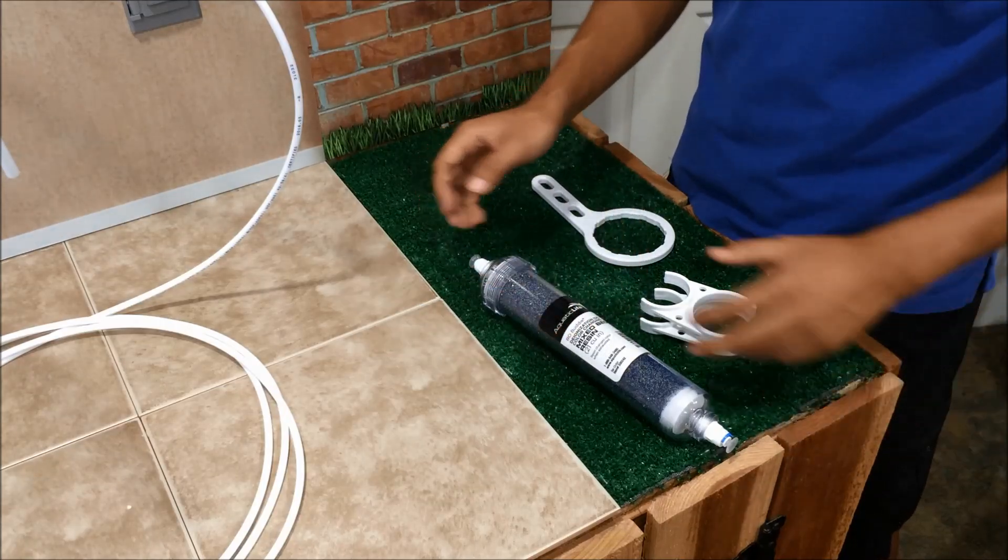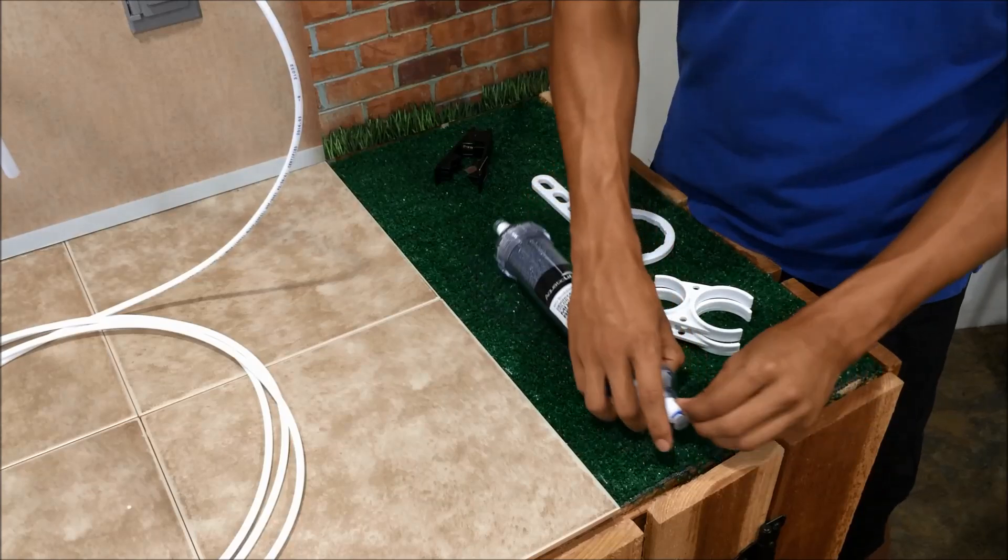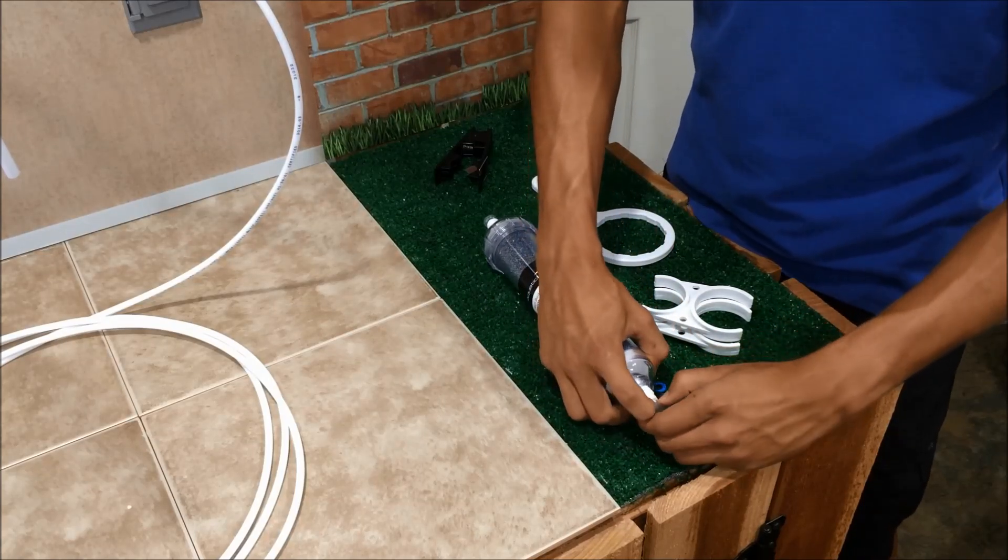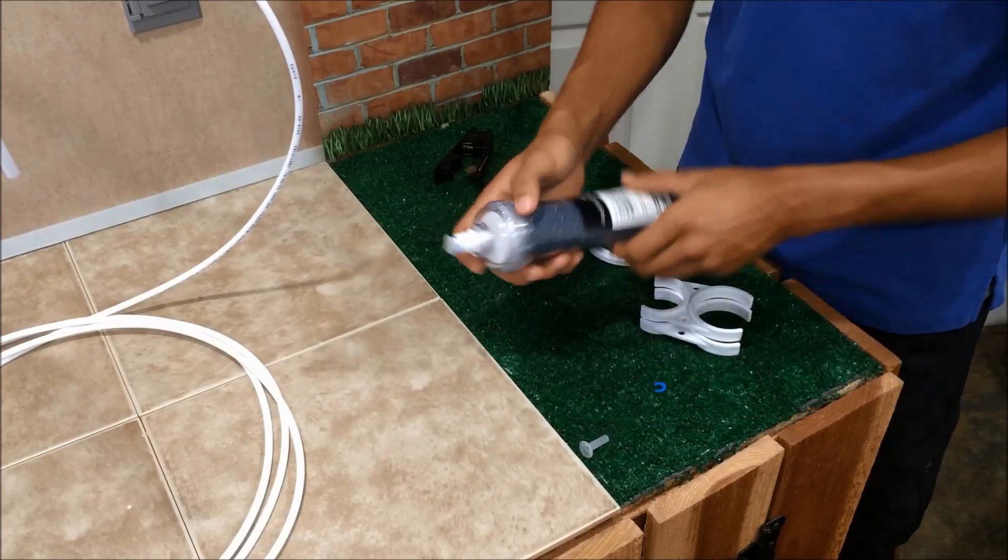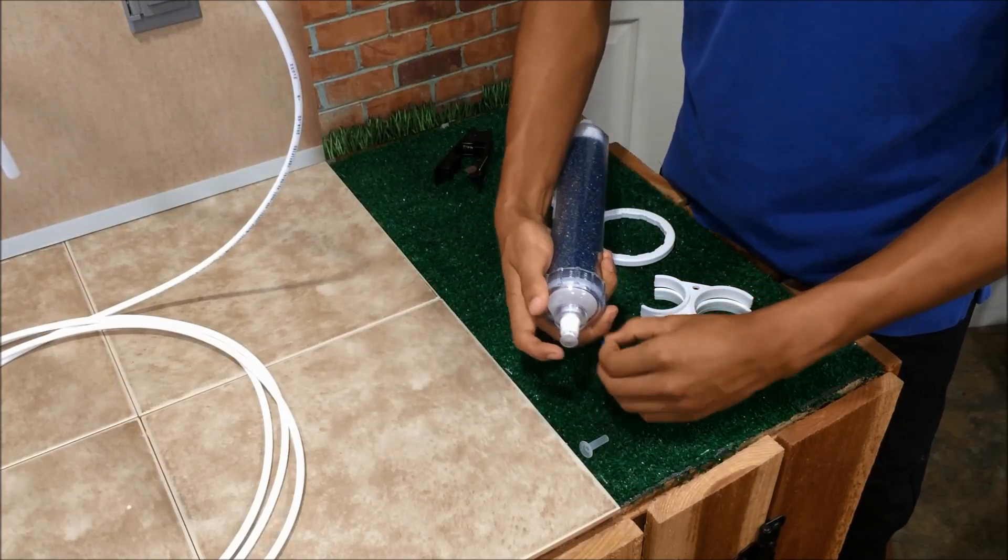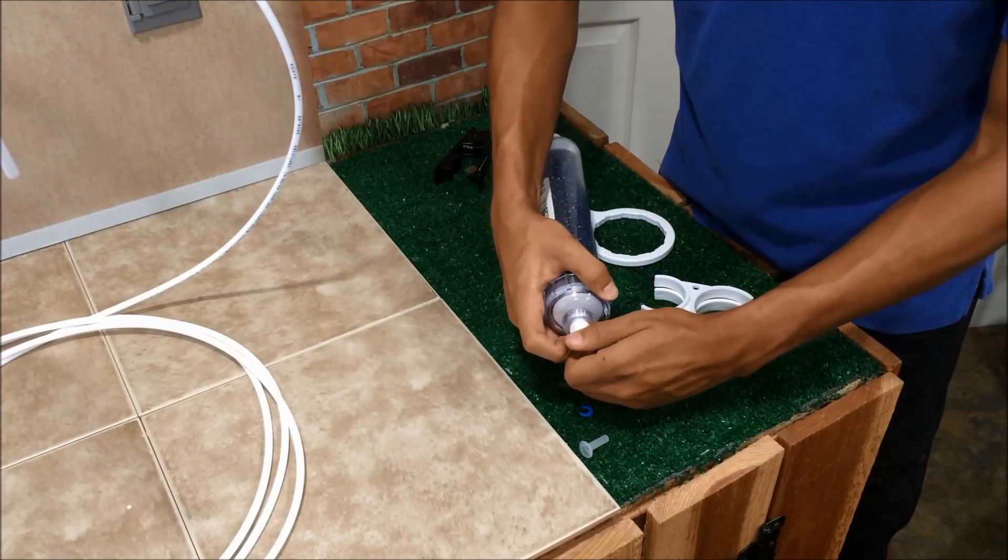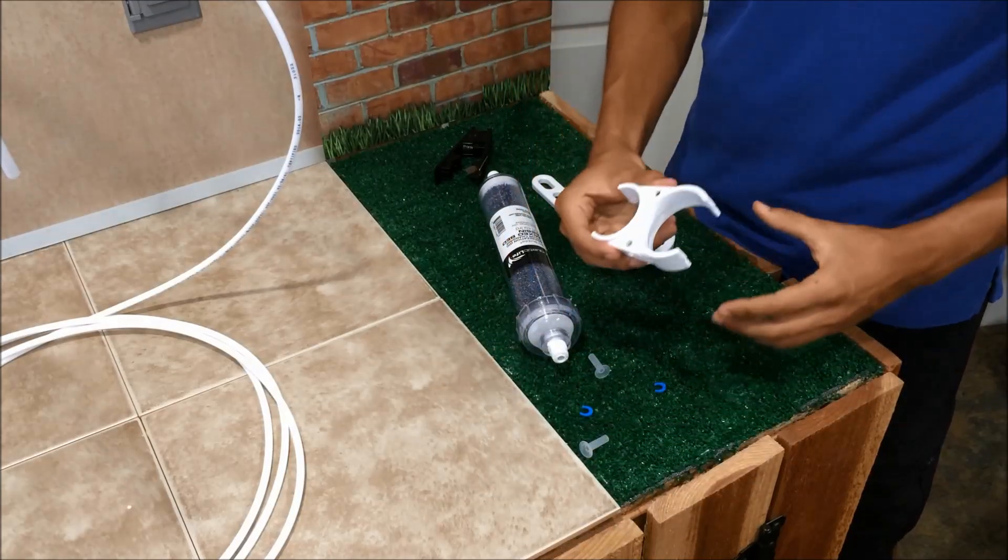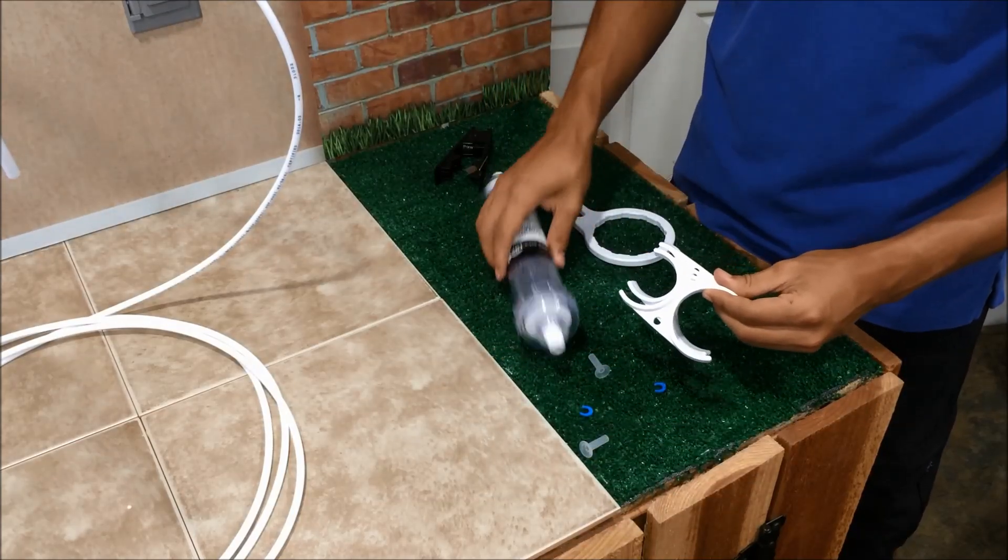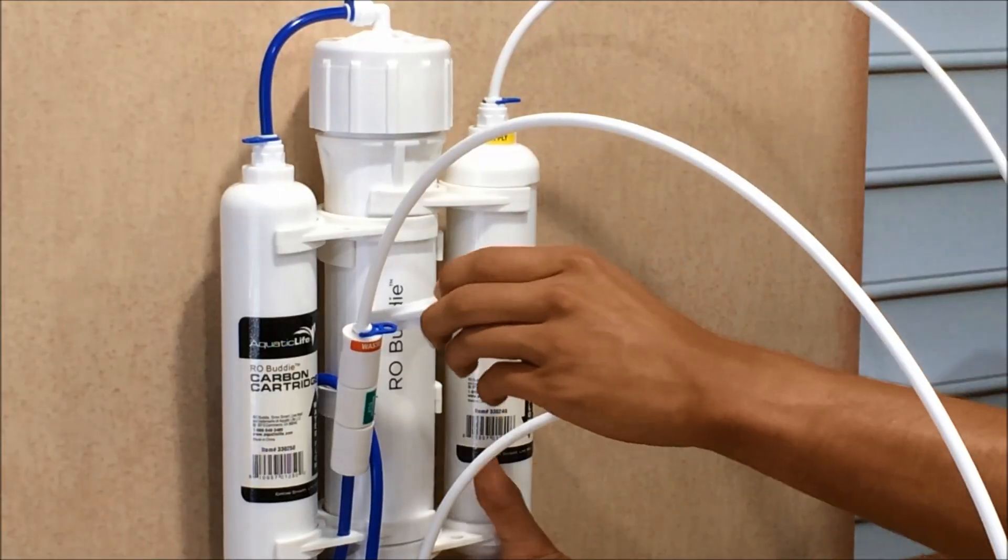After flushing the membrane, we can go ahead and install the DI cartridge. So we'll remove the plugs here at the end of it. And then once you've got the plugs off, you'll go ahead and place these clips on the membrane housing, which will allow you to install the DI cartridge.